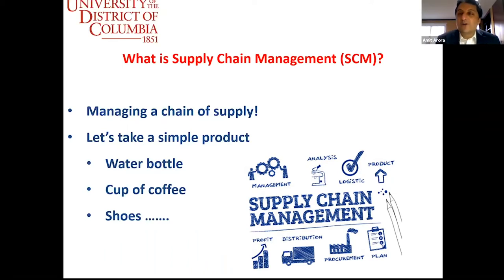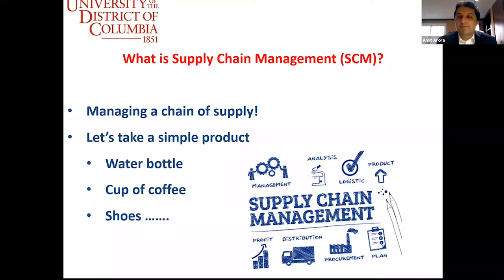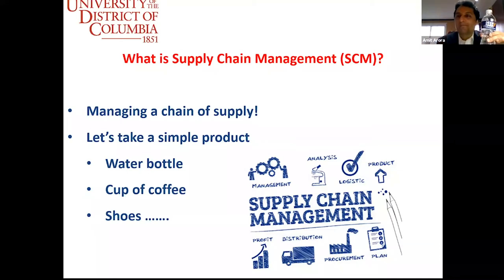Let's talk about what supply chain management is. Simply put, anything that you see, any product you touch, anything you want to buy has a supply chain behind it. We can understand supply chain management with the help of a very simple product — let's say a water bottle. For a bottle of water, what do you really need? You need a plastic bottle, clean drinking water, plastic caps, and a label. That's what makes a bottle of water.